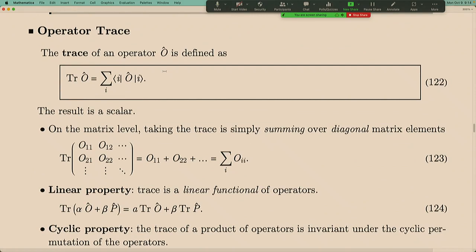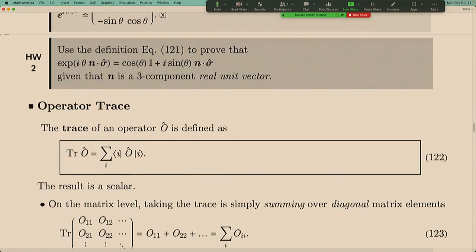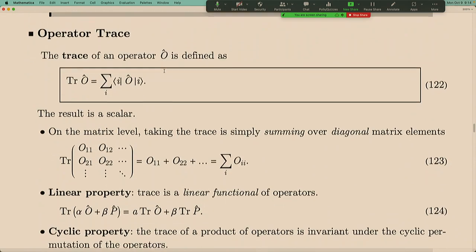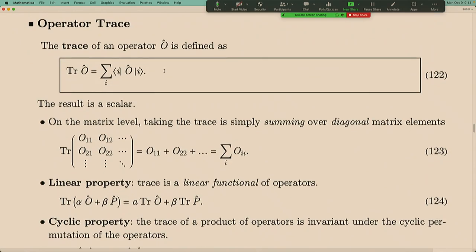There's a final concept: operator trace. The trace of an operator is defined by sandwiching the operator between basis states and summing over all orthonormal basis states. This is the definition of trace in a Hilbert space, and it turns out to be independent of the choice of basis.